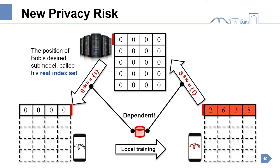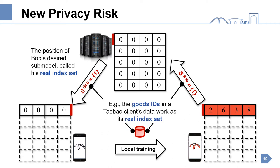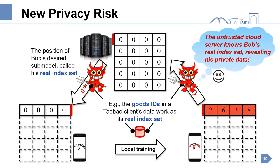Just as every coin has two sides, the submodel framework not only improves efficiency, but also brings in new privacy risks. The position of a client's desired submodel in the full model, called the real index set, depends on the client's private data. For example, the goods IDs in a Taobao client's data work as its real index set. To download a submodel and to upload the update, the untrusted cloud server can know the client's real index set and reveal its private data. This breaks the target of federated learning.